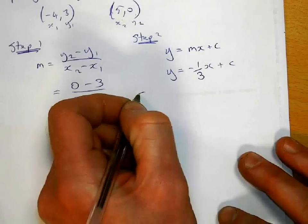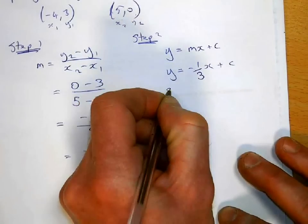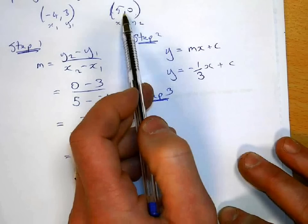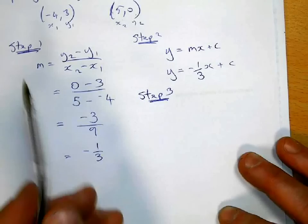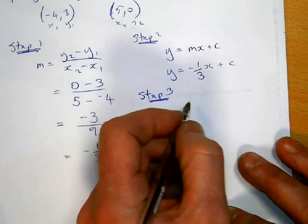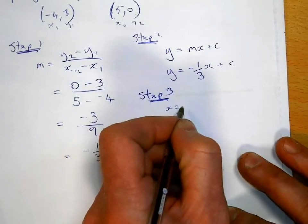Step three, we're going to pick any value. And the one I'm going to pick is the easiest one. It's definitely 5, 0. So I'm going to write down that x is going to equal 5 and y is going to equal 0.